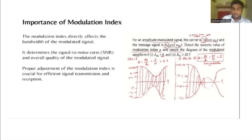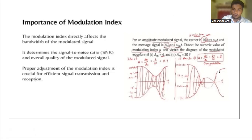For an amplitude modulation signal, the carrier is 10 cos(ωt) and the message signal is AM cos(ωt). We need to detect the numeric value of modulation index and sketch the diagram of the modulated waveform when AM is equal to 4 and AM is equal to 0. This is a problem that we have solved in the previous video.